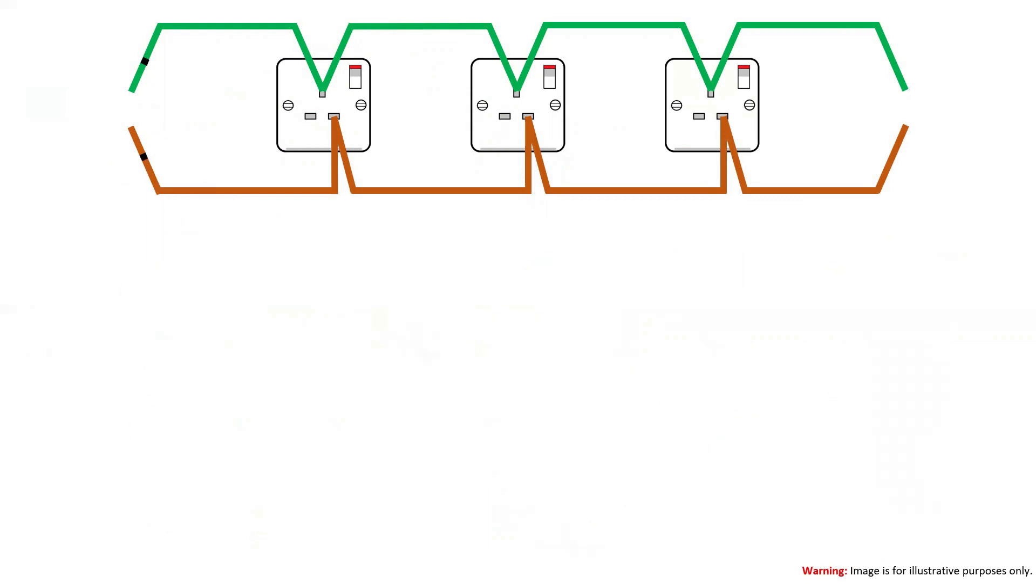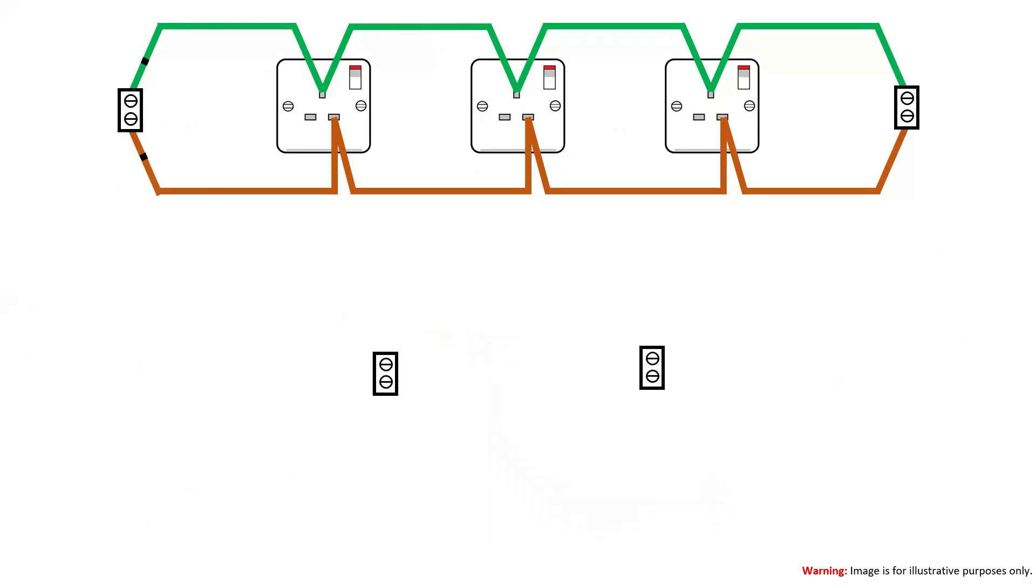I'm going to connect the ring incorrectly so that I can show you why it's important. I will do that by connecting the line and CPC conductor from the same leg of the ring together in connector blocks as shown in the diagram.